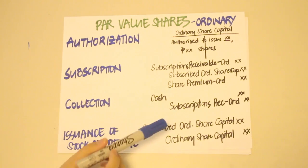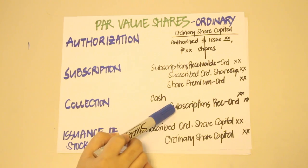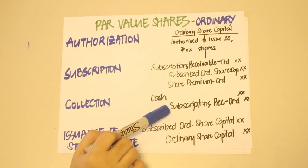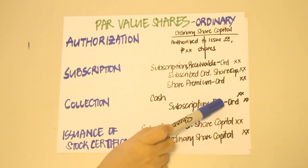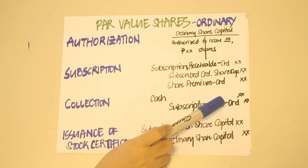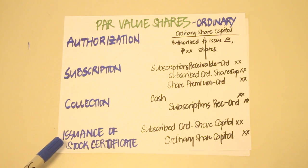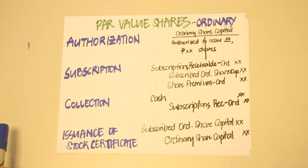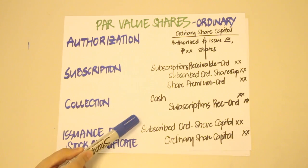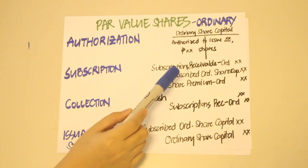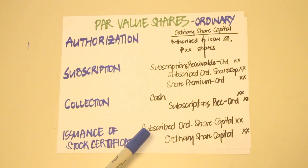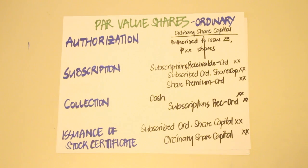When payment is collected, we debit Cash and credit Subscriptions Receivable for the same amount. Don't forget to indicate whether it's ordinary or preference. The last transaction is the issuance of stock certificates. Remember that stock certificates can only be issued upon full payment for the subscribed shares. To record this, you debit Subscribed Ordinary Share Capital — closing that account — and credit Ordinary Share Capital.